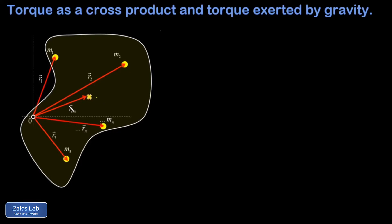In order to define torque you need a rotation axis in mind — that's at the origin given by this white circle — and all position vectors are measured relative to that rotation axis. To find the total torque exerted by gravity on this rigid body, we look at the torque exerted on every single point mass.